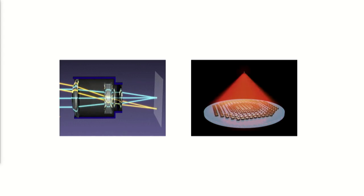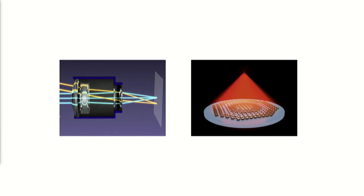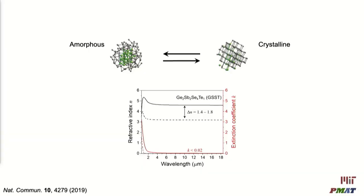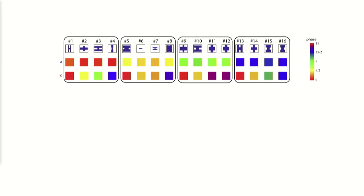We leverage the metasurface flat-optics architecture and combine it with an active material to realize a truly solid-state reconfigurable optical system. The flat and pixelated device architecture of meta-optics is the ideal platform for this kind of reconfigurability. We choose to use a phase-change material widely found in electronic memory industries, which we modify for optical applications. It has very good optical contrast between its amorphous and crystalline states, while maintaining high optical transparency in our spectral range of interest. By carefully designing our meta-atoms into different geometries, we can achieve distinct optical responses between the two structural states of the material.